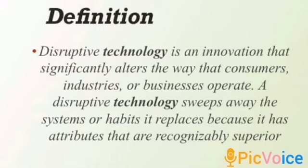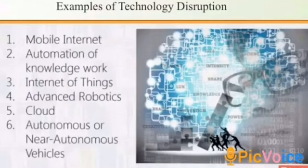A disruptive technology sweeps away the systems or habits it replaces because it has attributes that are recognizably superior. The first example is mobile internet. Mobile internet is the internet as accessed by means of a smartphone or other mobile devices like audio and video or visuals.